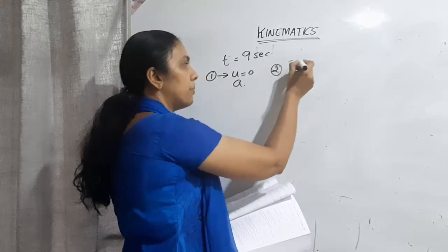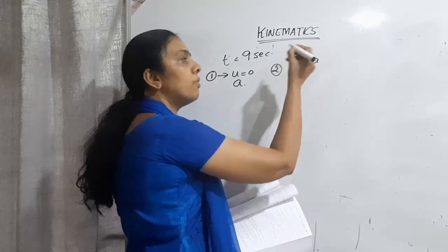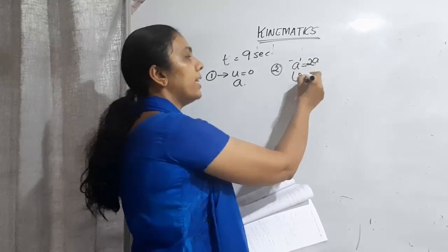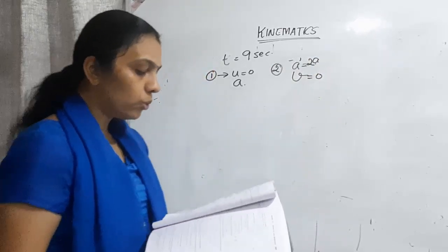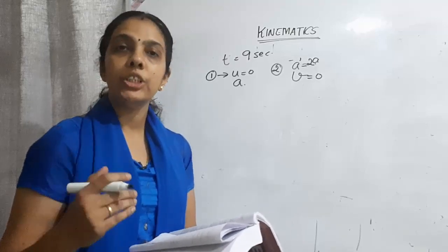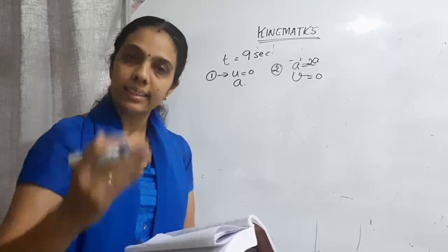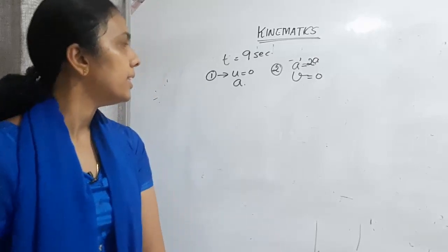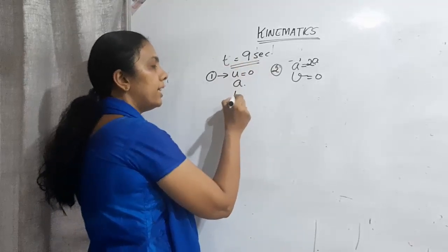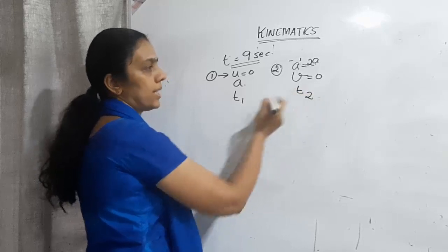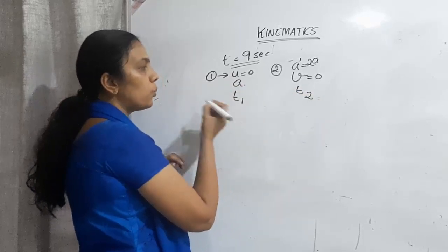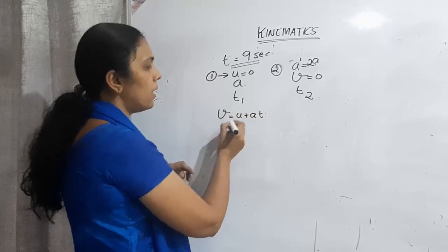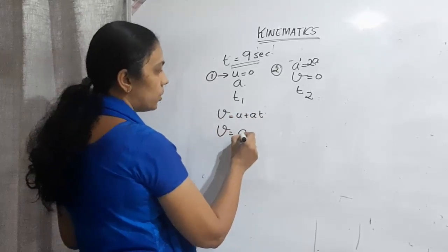The body starts from rest under acceleration a for time T1, reaching velocity v, then decelerates at 2a for time T2 and finally stops. For the first phase using v = u + at: v = 0 + a·T1, so T1 = v/a. For the second phase: initial velocity v, final velocity 0, retardation 2a, so 0 = v - 2a·T2, giving T2 = v/(2a).